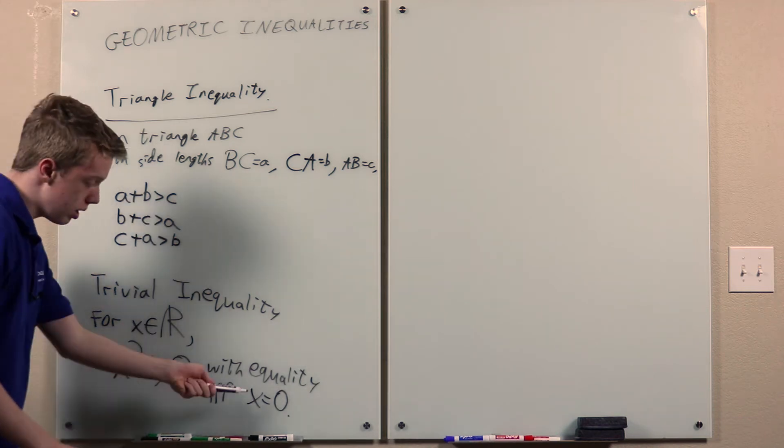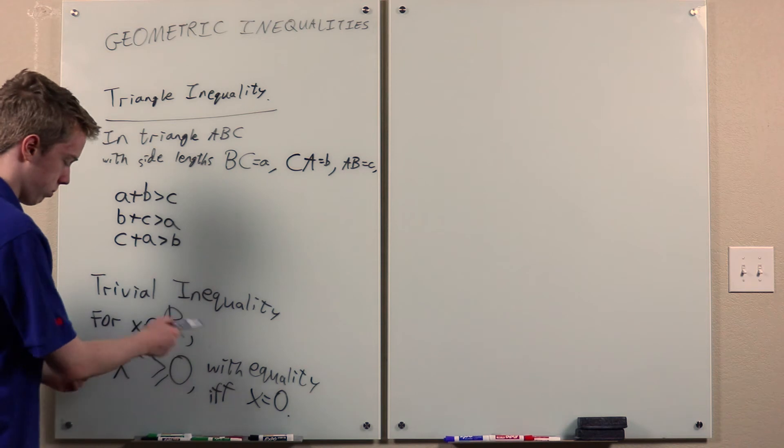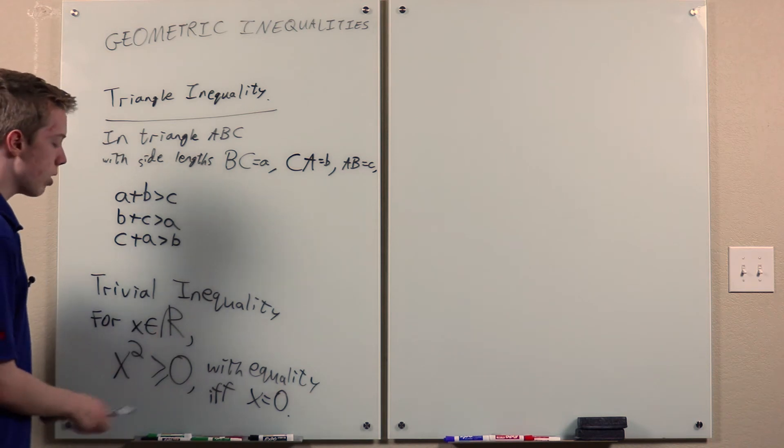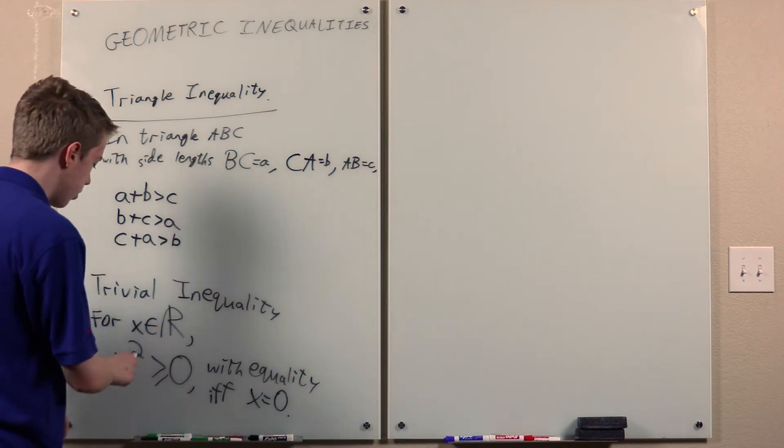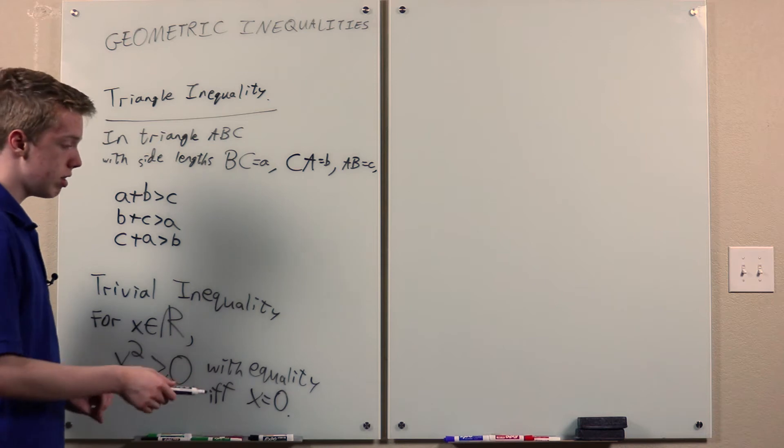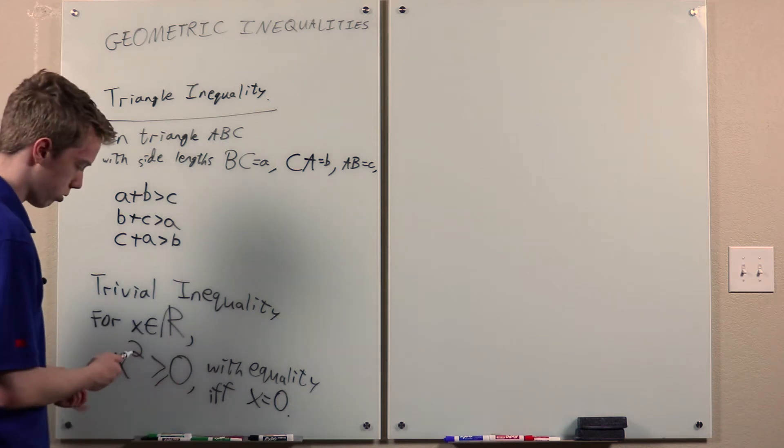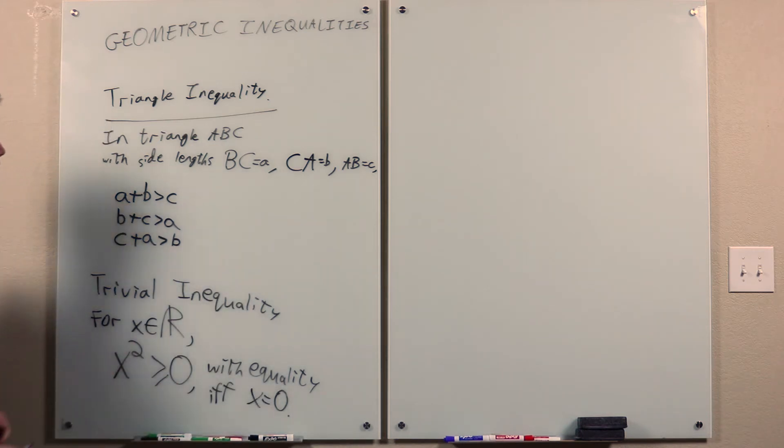Not too hard to prove. If x is 0, then we obviously have equality. If x is positive, then x squared is positive. If x is negative, then x squared is positive. So that's why this is true.